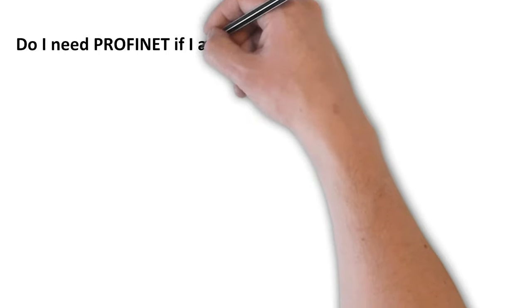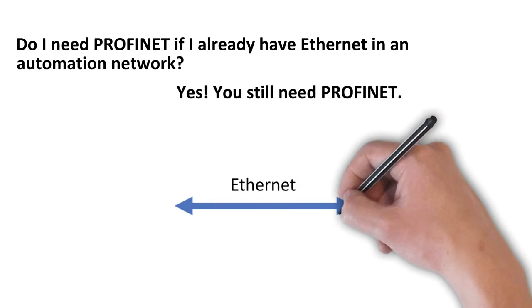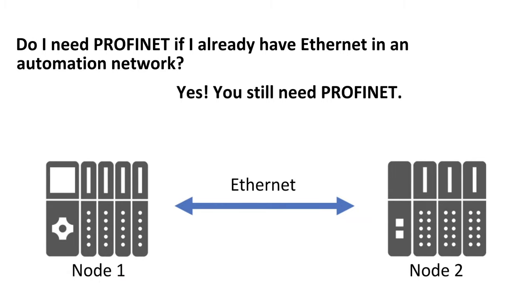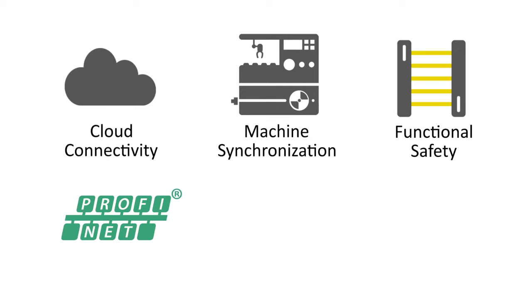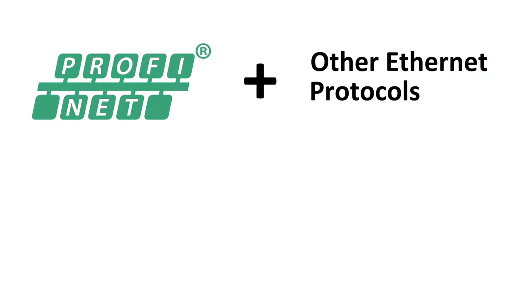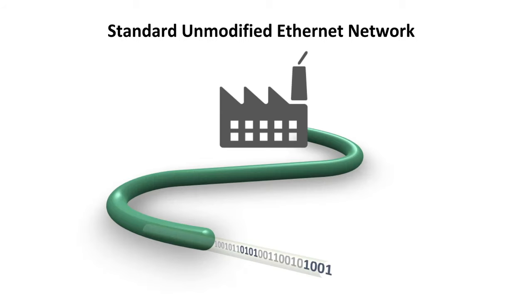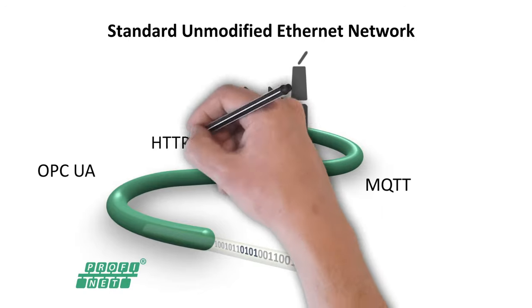Do I need Profinet if I already have Ethernet in an automation network? Yes, you still need Profinet. You create a connection if you link two nodes in a network with an Ethernet cable, but there is so much more than just linking those two components. You will require underlying protocols to fulfill different tasks, such as sending data to the cloud, synchronizing machines, and implementing functional safety. Profinet is critical to establishing fast and deterministic data exchange between controllers and devices. Besides Profinet, you can employ other Ethernet-based protocols to complement your network — for example, MQTT, SNMP, OPC UA, or HTTP to send data vertically, manage network diagnostics, or interface with web servers.